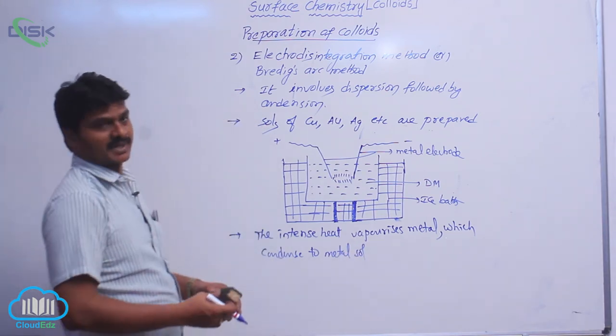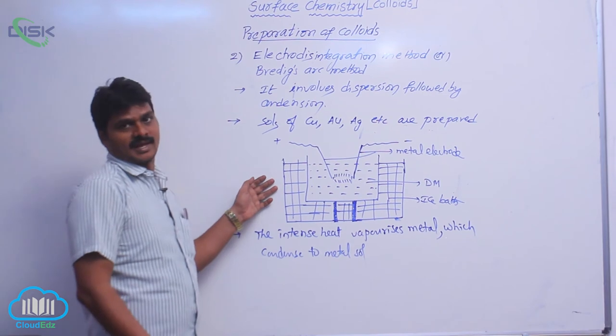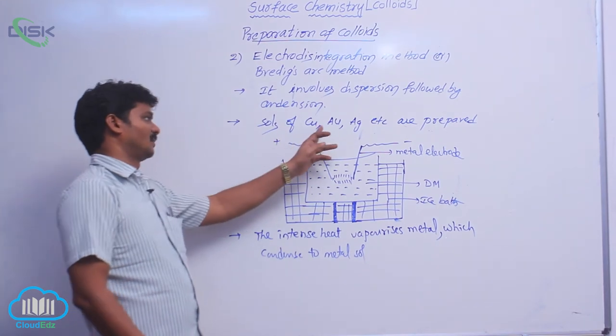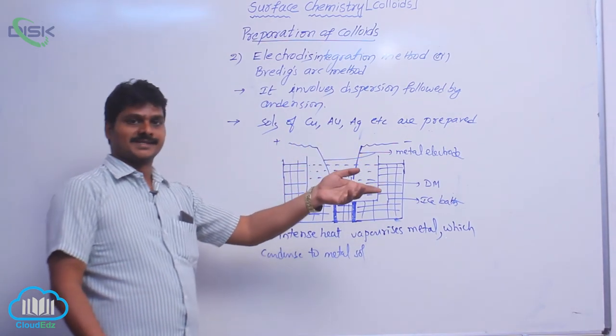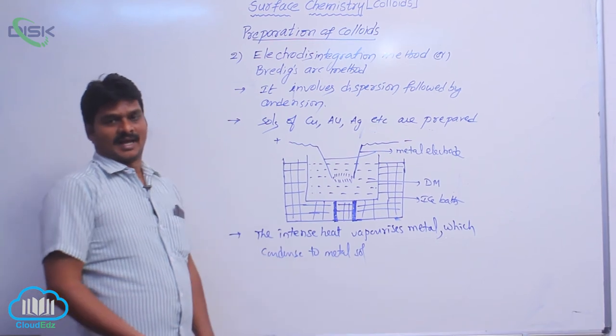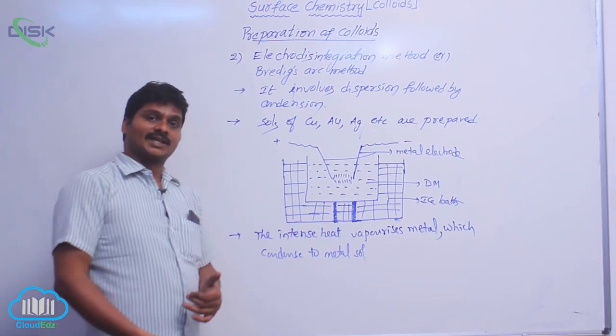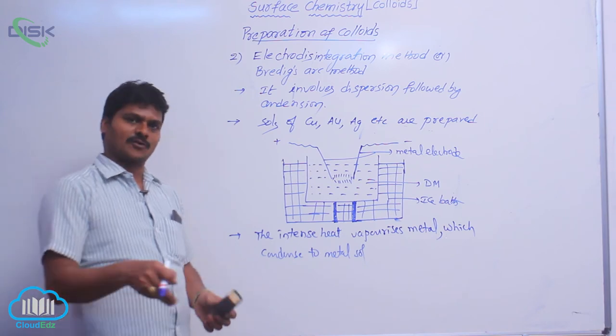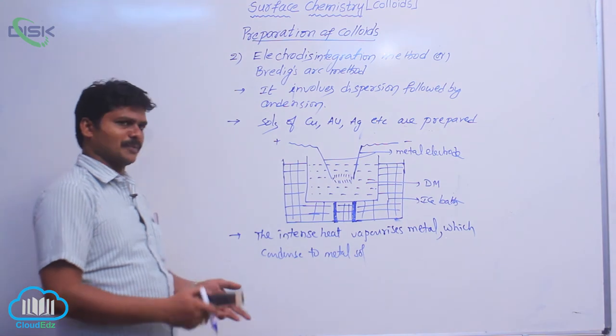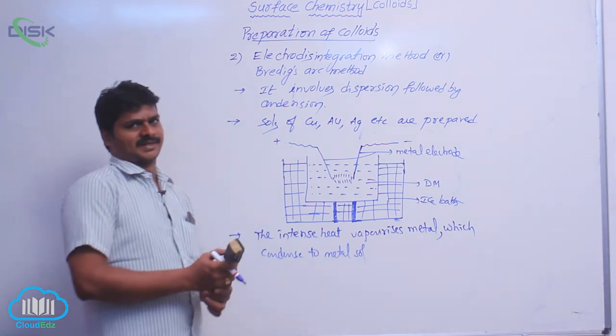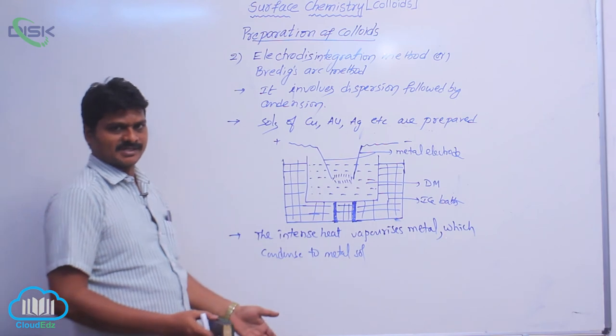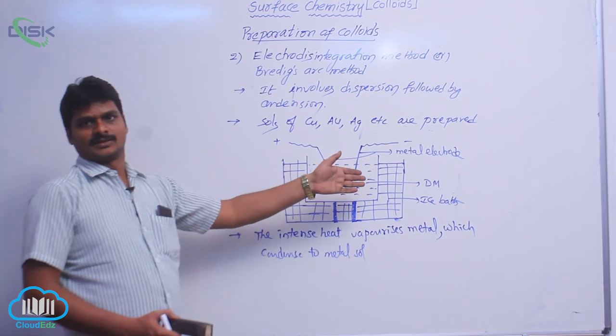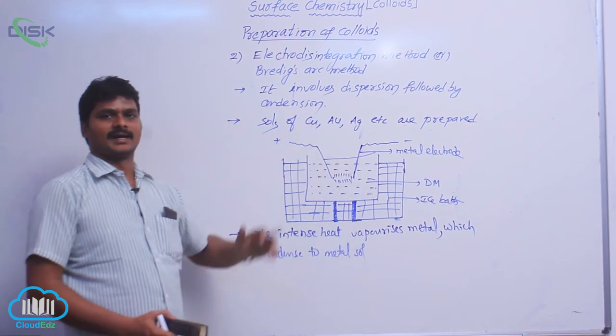This is the indirect method for the preparation of a gold salt. I said earlier that gold salt is a lyophobic. I said that lyophilic salt is prepared in the direct method. Direct mixing of DP and DM we can prepare a lyophilic. But whereas, lyophobic is prepared in an indirect method. Using Bradick's arc method which is an indirect method for the preparation of these gold, silver and copper salts.